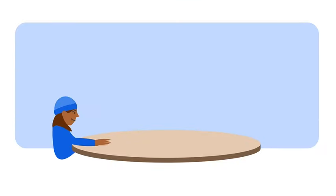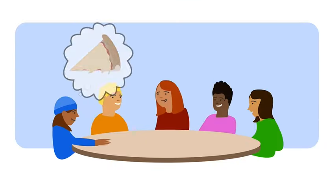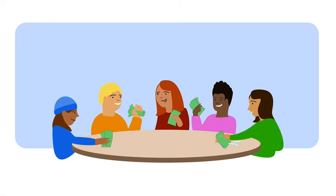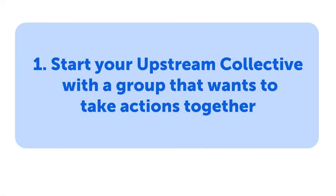To begin, you decide to host a pizza party. You gather your friends together to organize and pay for it. Here's Collective Truth number one. Start your Upstream Collective with a group that wants to take actions together.